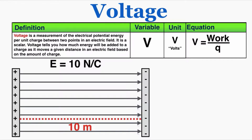Let's figure out the voltage across those 10 meters, since voltage is the electrical potential energy per charge between two points. My two points are from the positive plate to the negative plate — the full 10 meters. I'll place a positive 2-coulomb charge at the beginning of that range and observe how much energy it gains as it moves through the field. Work equals the energy added, and work also equals force times distance, so if I find the force on the charge I can multiply by the distance to find the work, then divide by the charge to find the voltage.